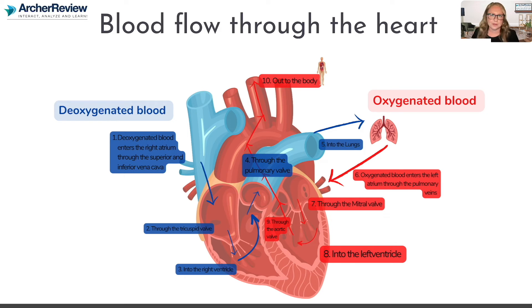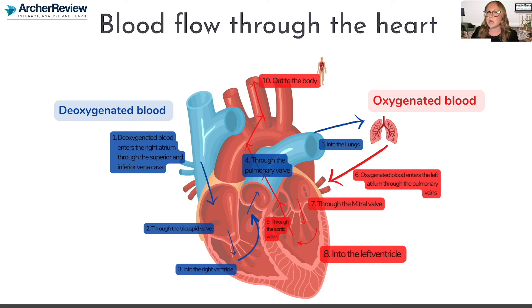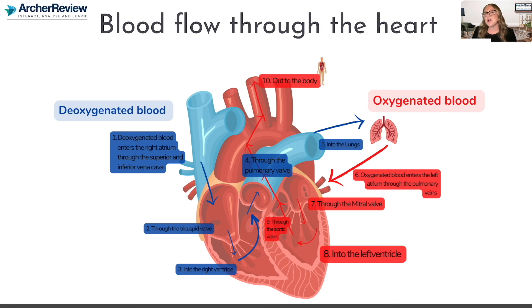A couple of key takeaways: right side of the heart — deoxygenated blood; left side of the heart — oxygenated blood. Where are they sending the blood? The right side is sending deoxygenated blood to the lungs — that's what's referred to as the pulmonary circuit. The left side deals with oxygenated blood and sends it out to the body — that's the systemic circuit. So: right side, deoxygenated blood, goes to the lungs; left side, oxygenated blood, goes to the body.